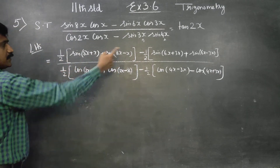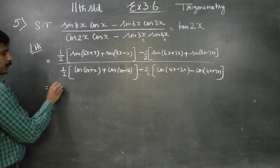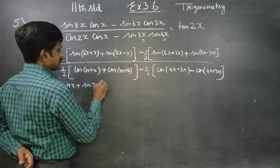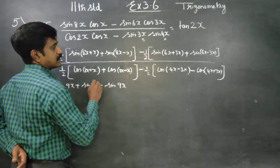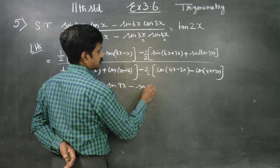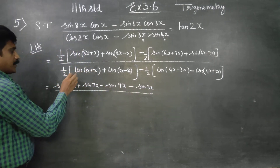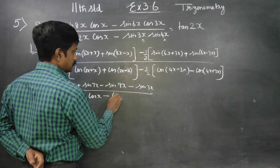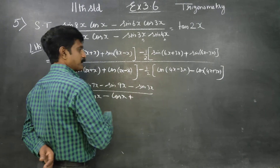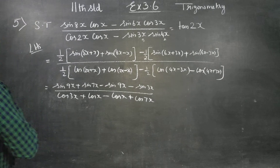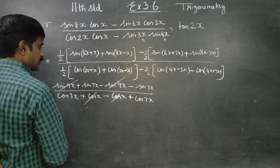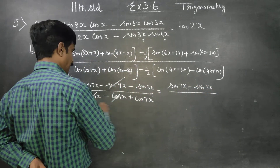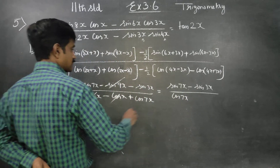Take the common factor and cancel. Cancel cancel sin. The result gives us sin 9x divided by cos 3x, times cos x. We then have cos 7x minus sin 3x over cos 7x plus cos 3x.